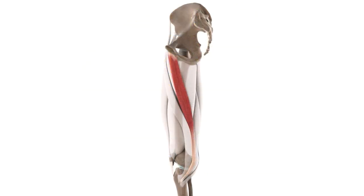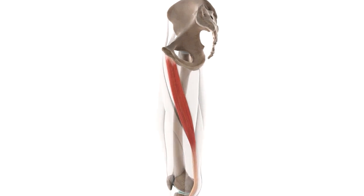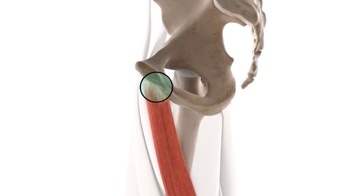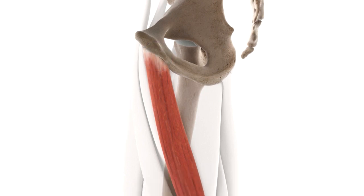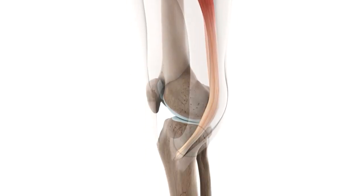The gracilis is the weakest member of the adductor group and the most superficial muscle of all of them. This means that it is closest to the surface of your body with no other muscles covering it, which also makes it the most medial muscle of the thigh. The gracilis is a long, strap-like muscle that originates from the inferior pubic ramus and joins the pes anserinus with the two other adductors.